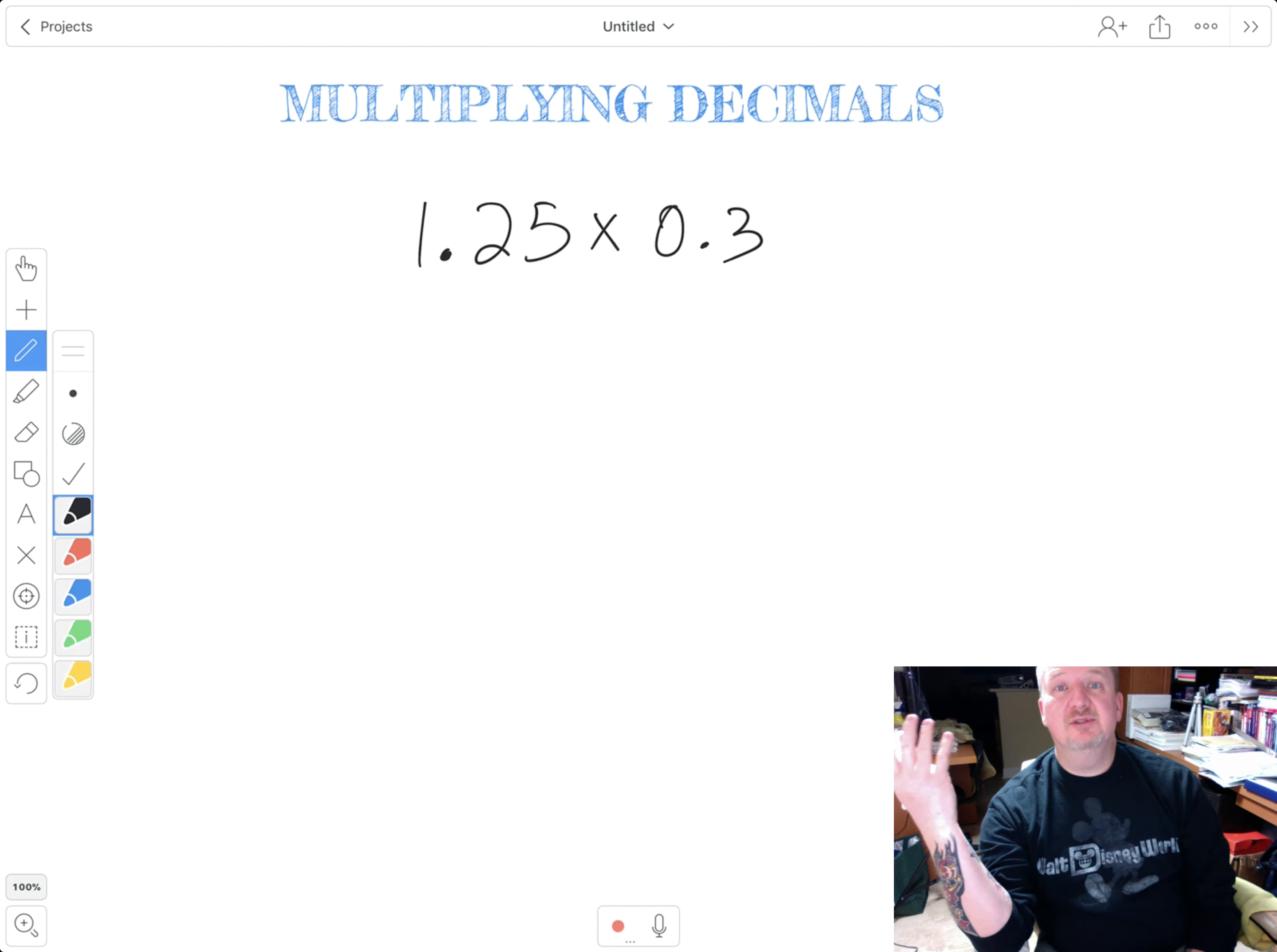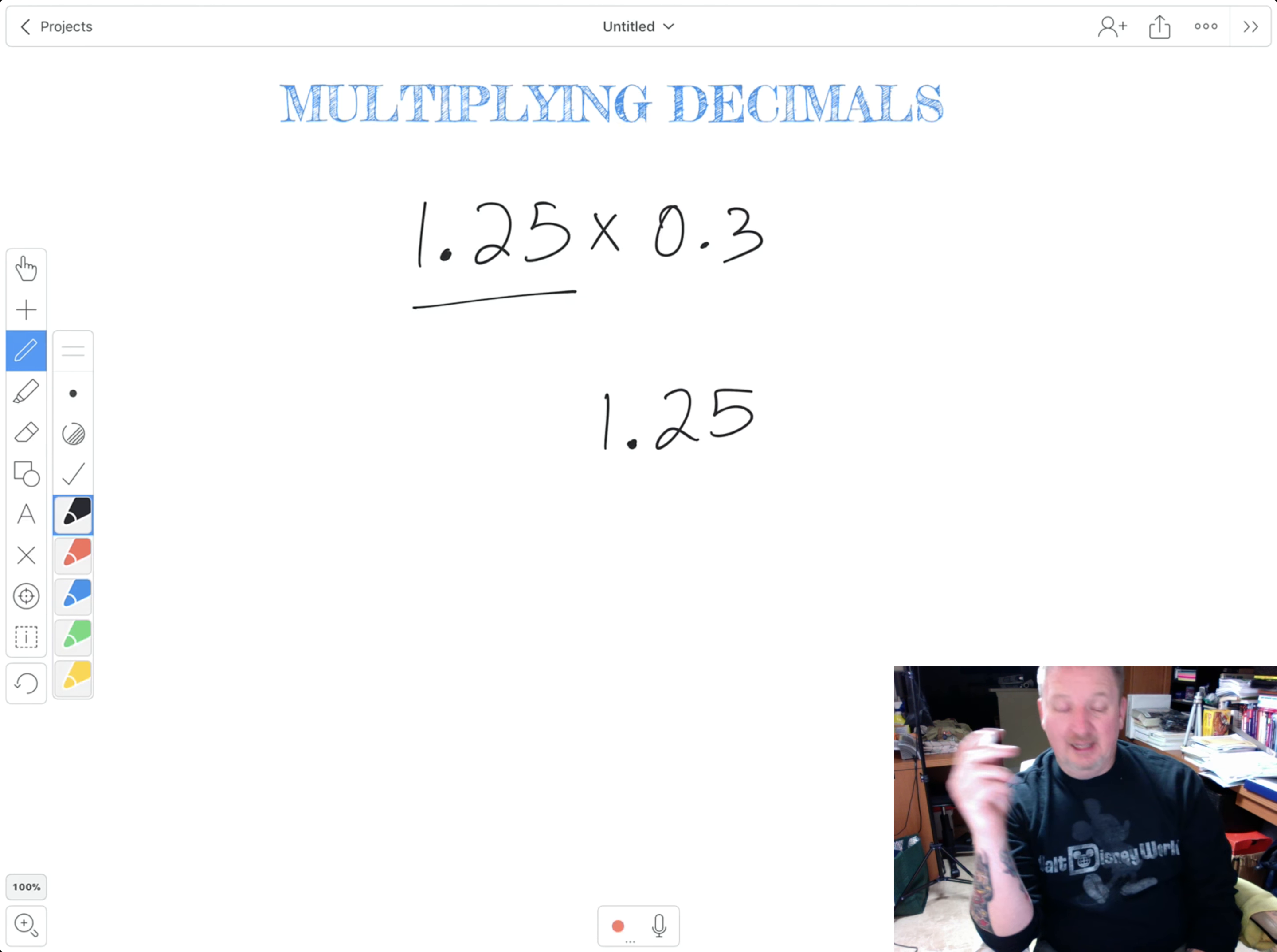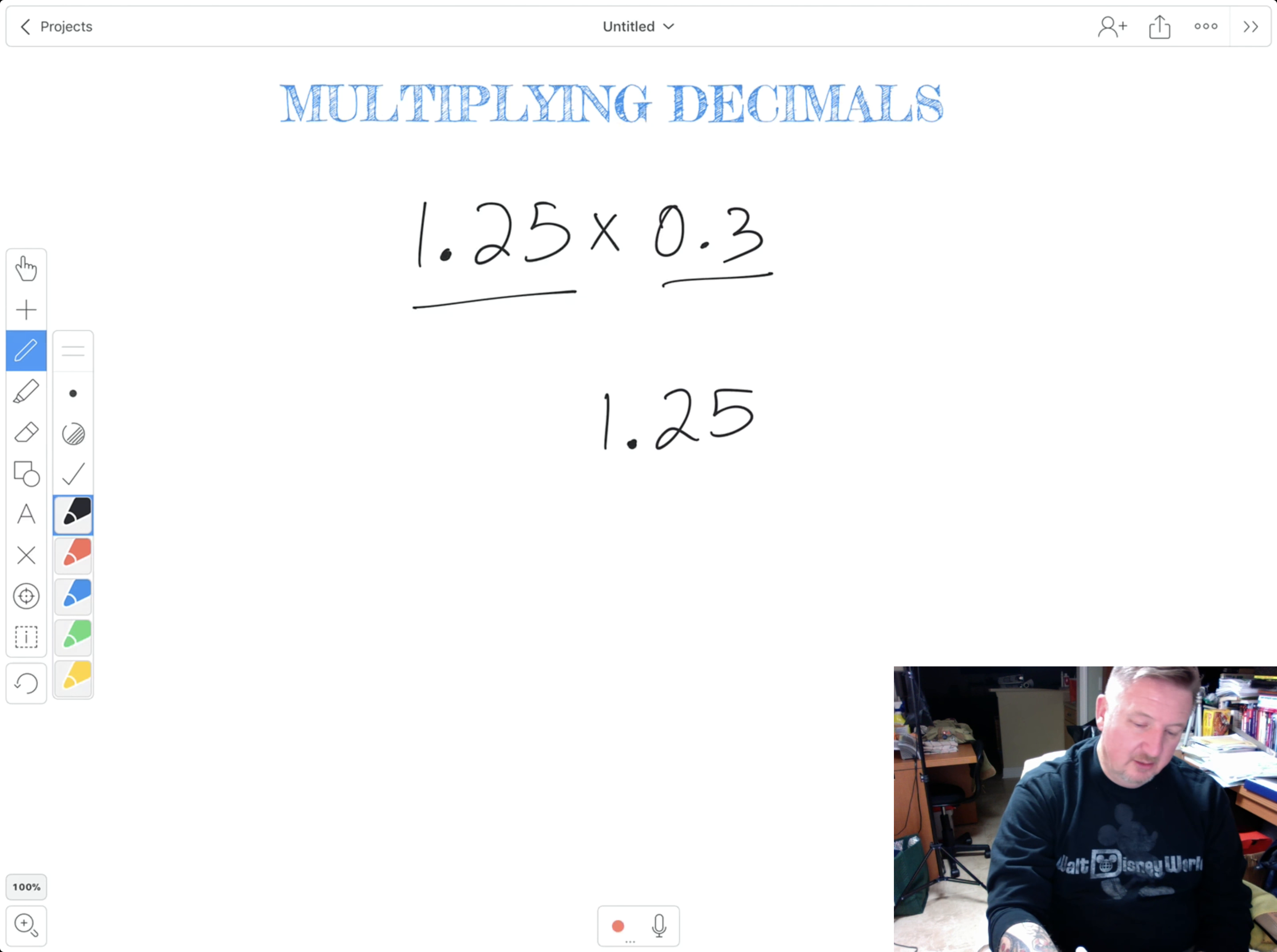So here's the first thing I want to do. I want to take the longest number without regard to the decimal and put that number on the top, 1.25. And then I'm going to take the other number, in this case 0.3, and I'm going to put that on the bottom.